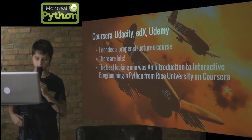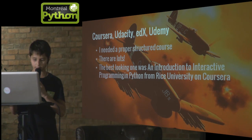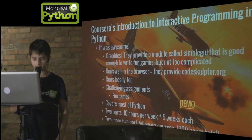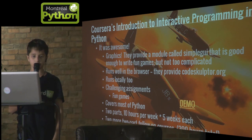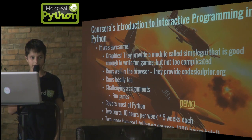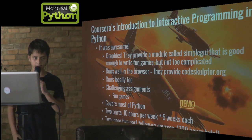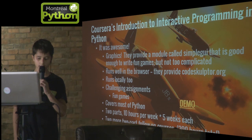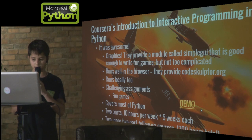The best looking course was an Introduction to Interactive Programming in Python from Rice University on Coursera. It was really good. They provided a graphics module called SimpleGUI that's good enough to write fun games but not too complicated. They provided an online editor called CodeSculptor.org, but you could also download the packages and run them locally on top of Pygame. They had challenging assignments of a few hundred lines of code, most of which were fun games, and it covered most of basic Python. It was two parts, ten hours per week, five weeks per part, with two more two-part full courses — about 300 hours of course material in total.